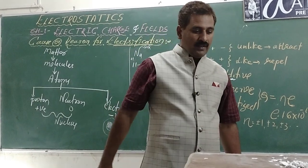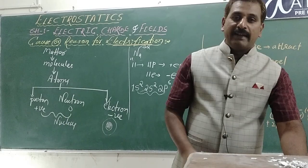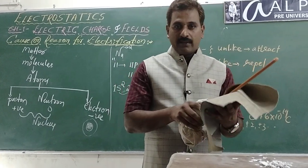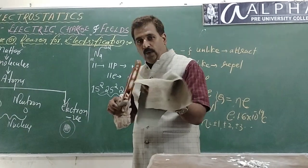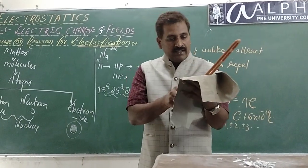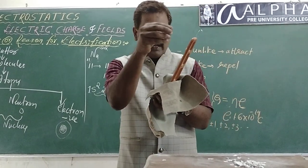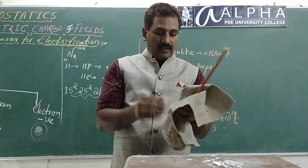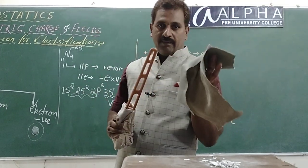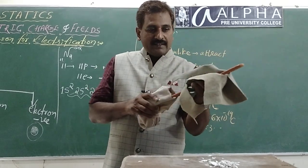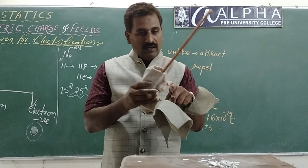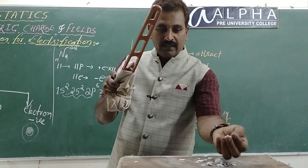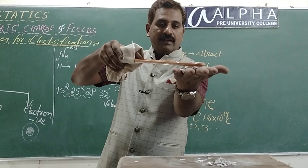Now, what did we do in the last class? I did this simple experiment — I took this plastic handle and rubbed it with this fur. According to our theory, why or how does electrification take place? When I rubbed like this, I am giving some energy to the electrons — the required energy. Absorbing that energy, electrons jump from one material to another. There are two objects here: one plastic handle and the other fur. If I rubbed like this, one body gets one kind of charge and the other gets another kind of charge.